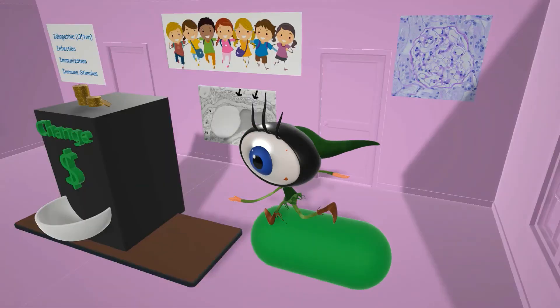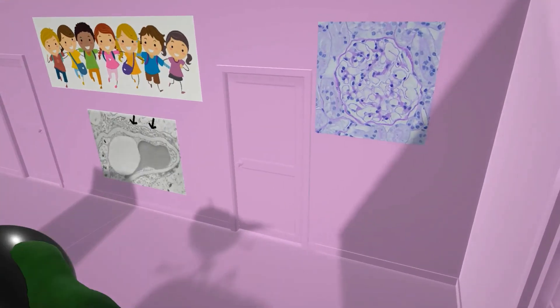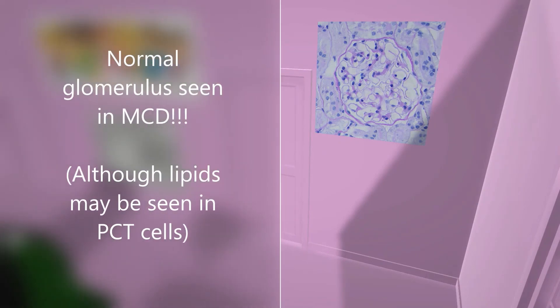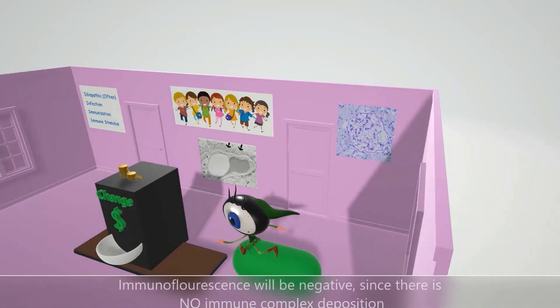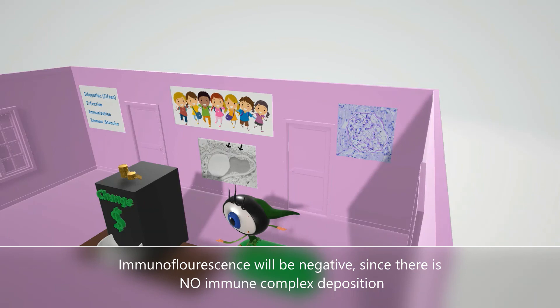Looking at this picture of the glomerulus, on histology there will be a normal glomerulus seen in minimal change disease, although lipids may be seen in the PCT cells. Immunofluorescence won't show anything out of the ordinary because in minimal change disease there is no immune complex deposition, as we see in other conditions.